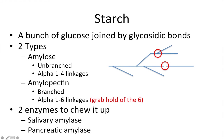Starch is a bunch of glucose molecules joined by glycosidic bonds. There are two main types: amylose and amylopectin. The main type of question associated with these is the type of linkage. Amylose is an alpha-1,4 linkage, and amylopectin is an alpha-1,6 linkage — referring to which carbon on one glucose is attached to which carbon on the other. This circle here shows an alpha-1,4 link, a straight unbranched link.